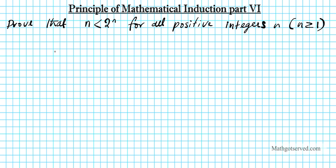Let's go ahead and do the proof. First, let's talk about the plan and then we'll implement it. The plan is a three-part process. Part one: we are going to show that the base case is true. Part two: we are going to make a hypothesis known as the inductive hypothesis.